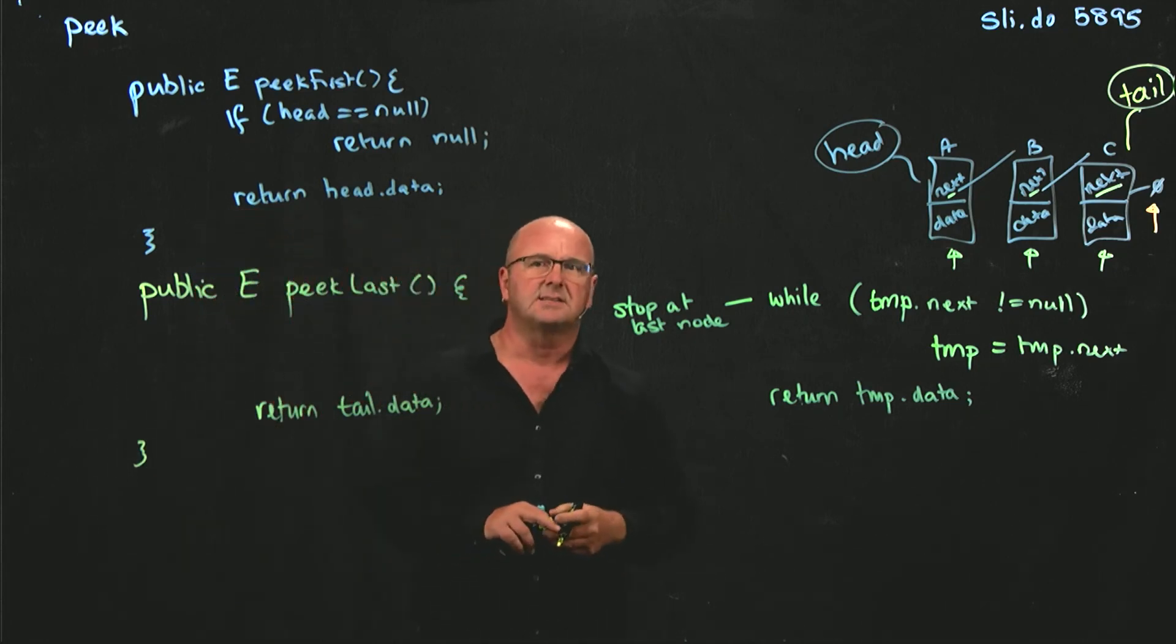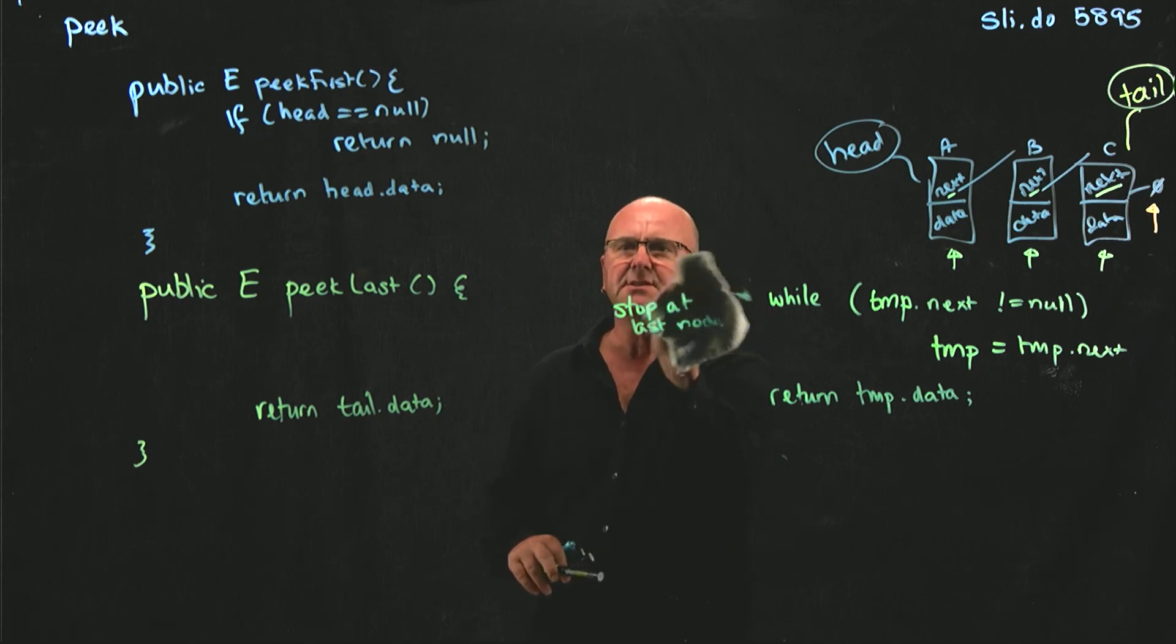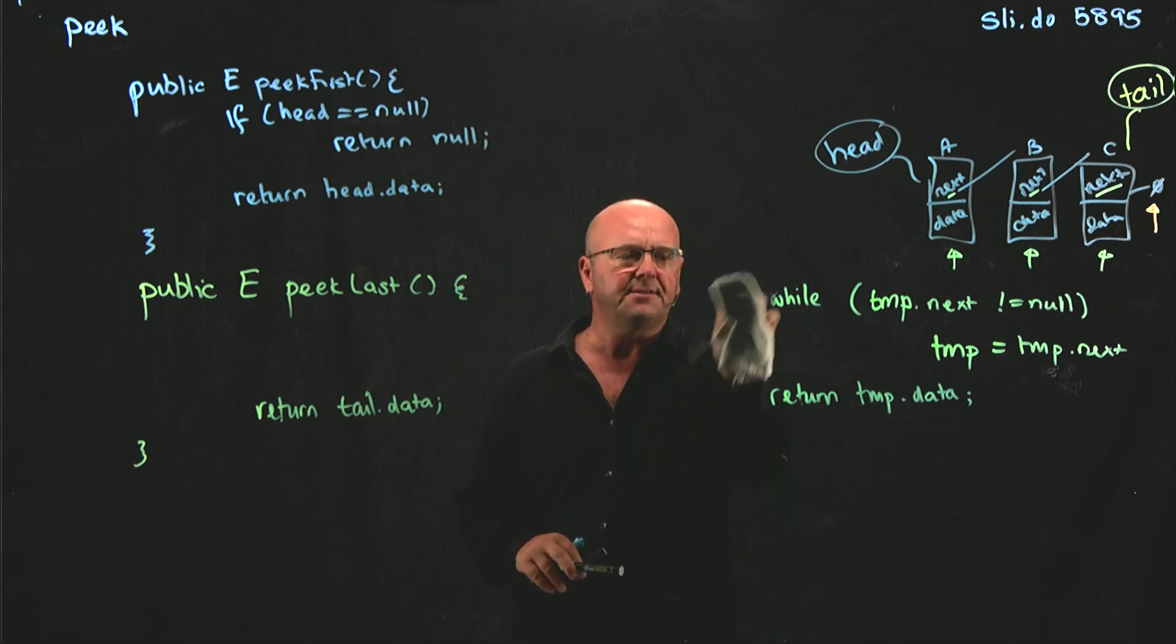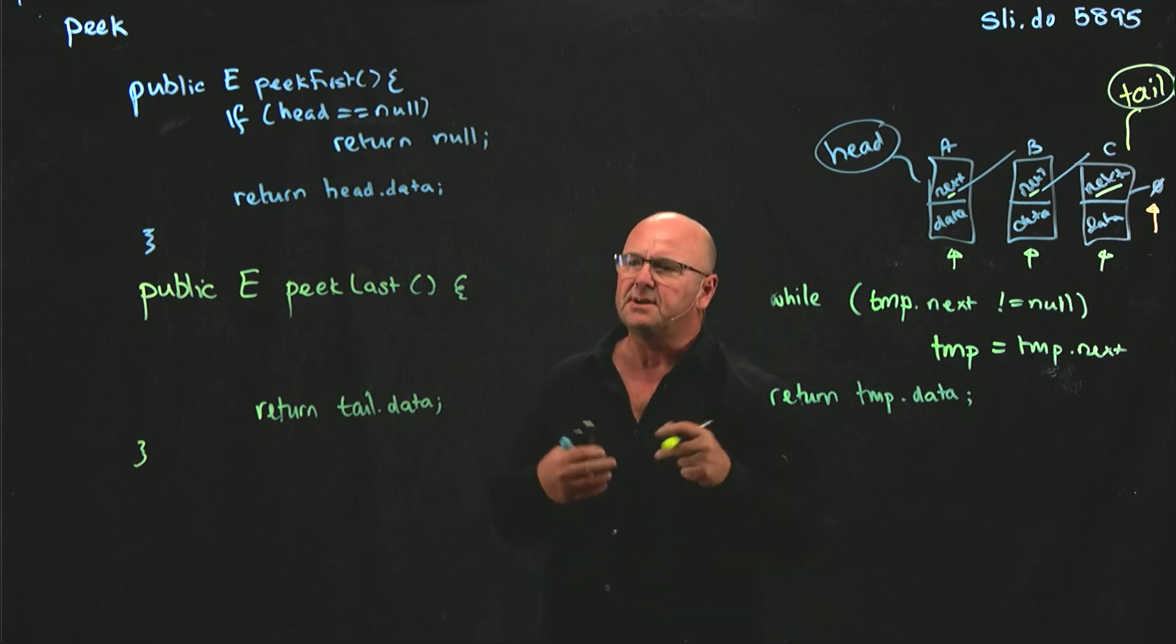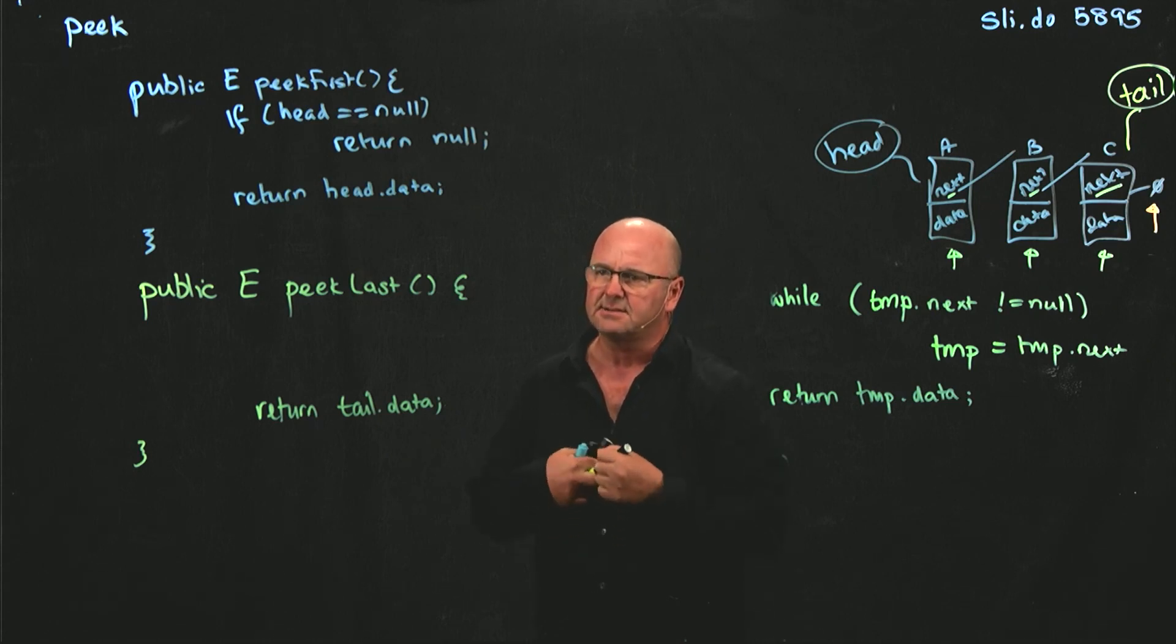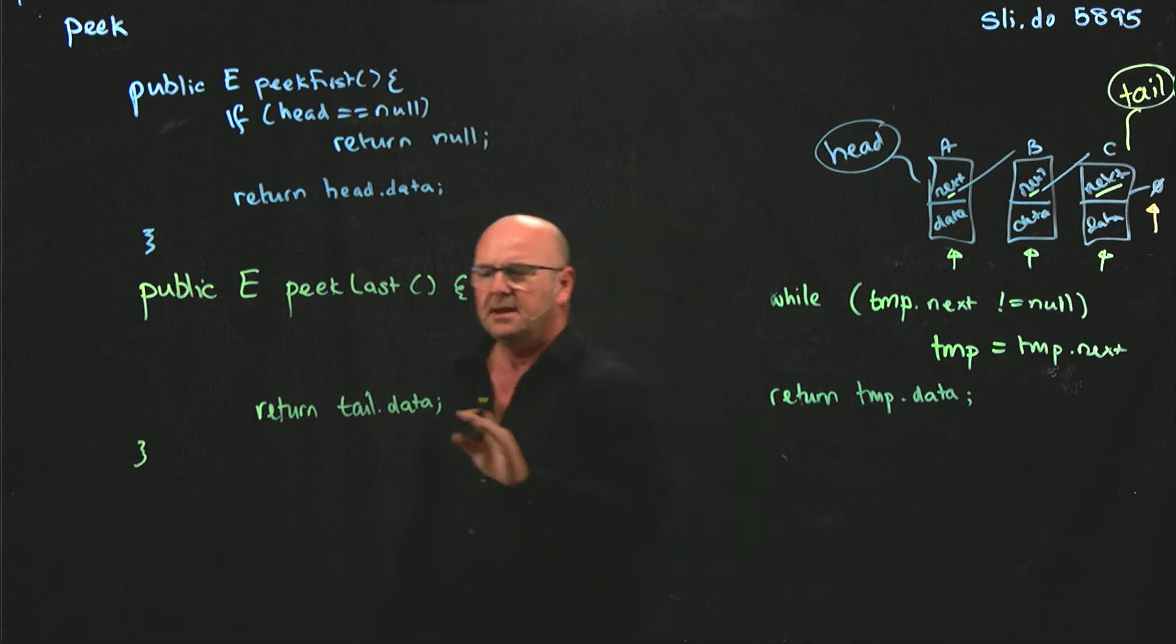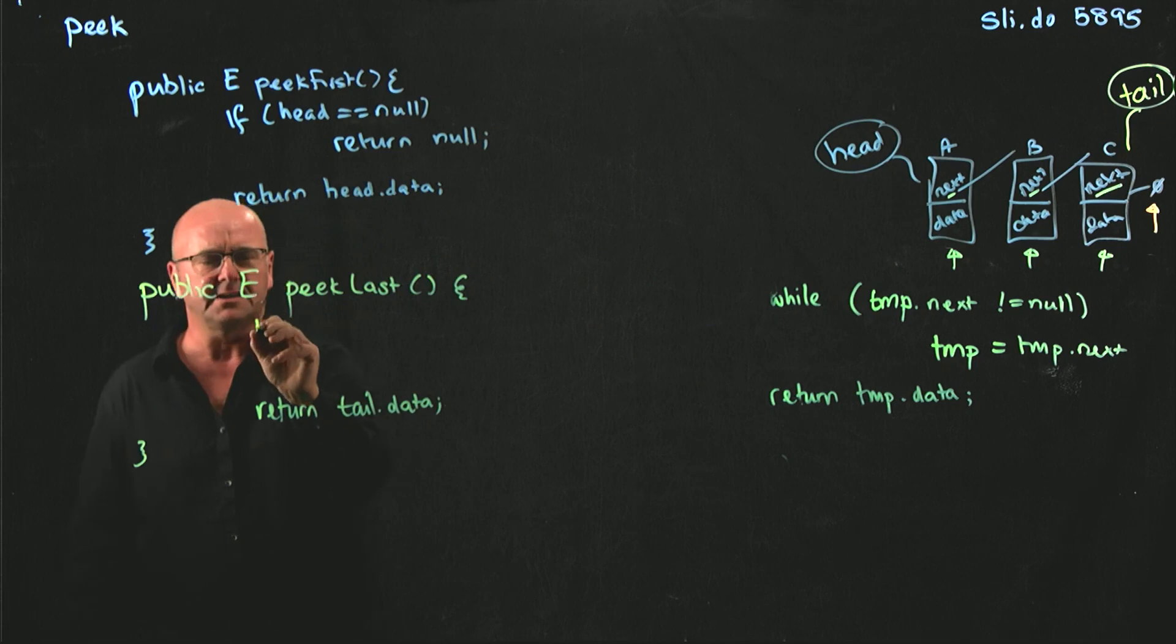What's the complexity of doing that? It's big O of 1. It's constant time, right? If there's a million things in our list, we don't have to go through a million things to get to tail.data. We're right there. Again, we need to make sure that our list isn't empty.